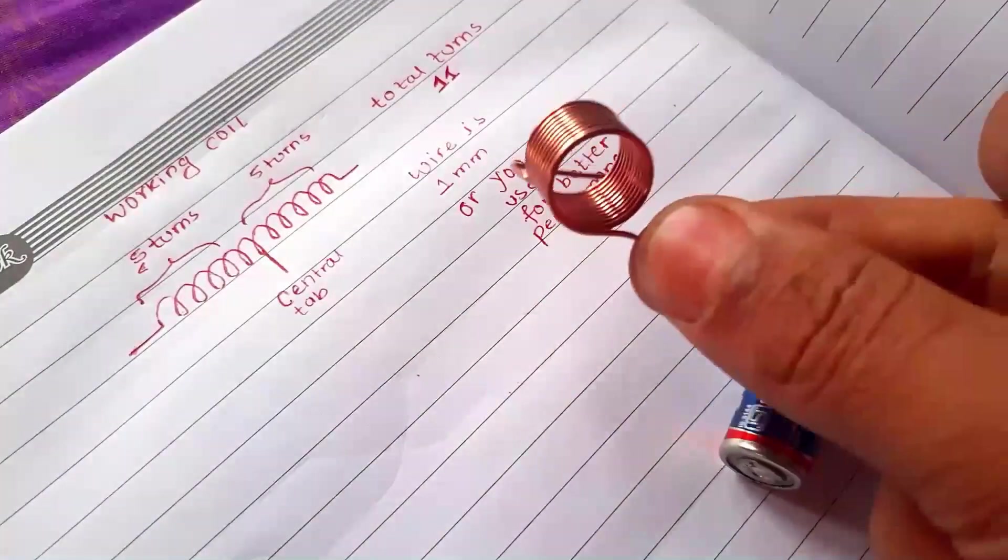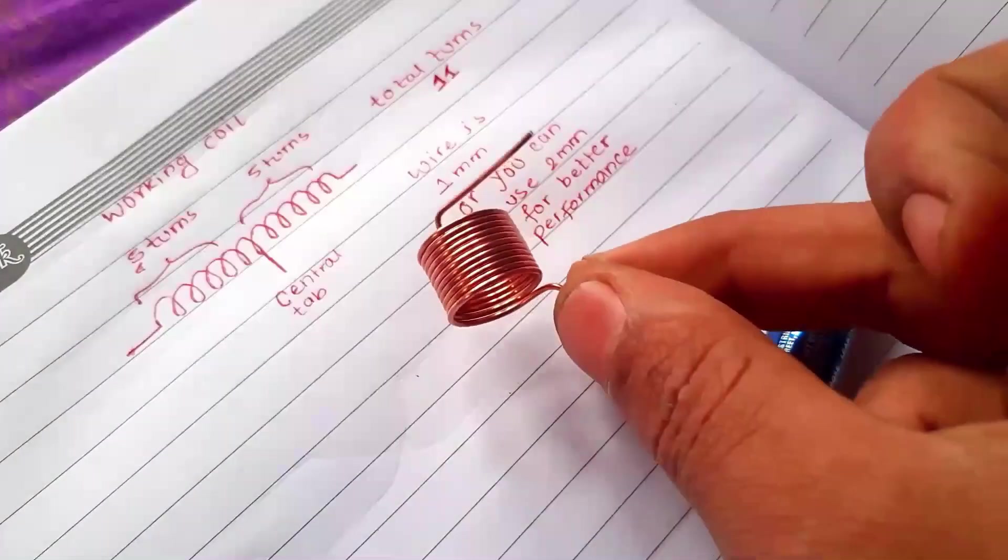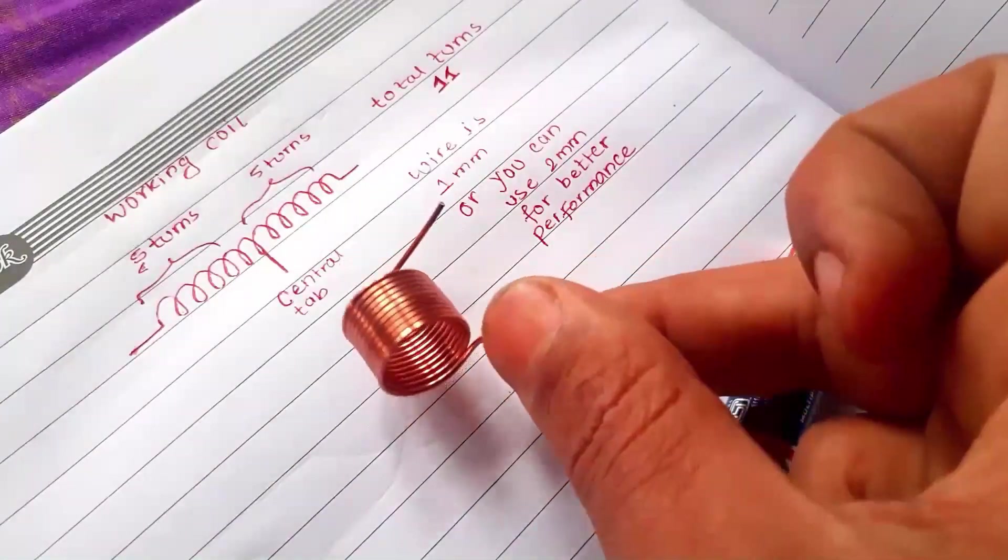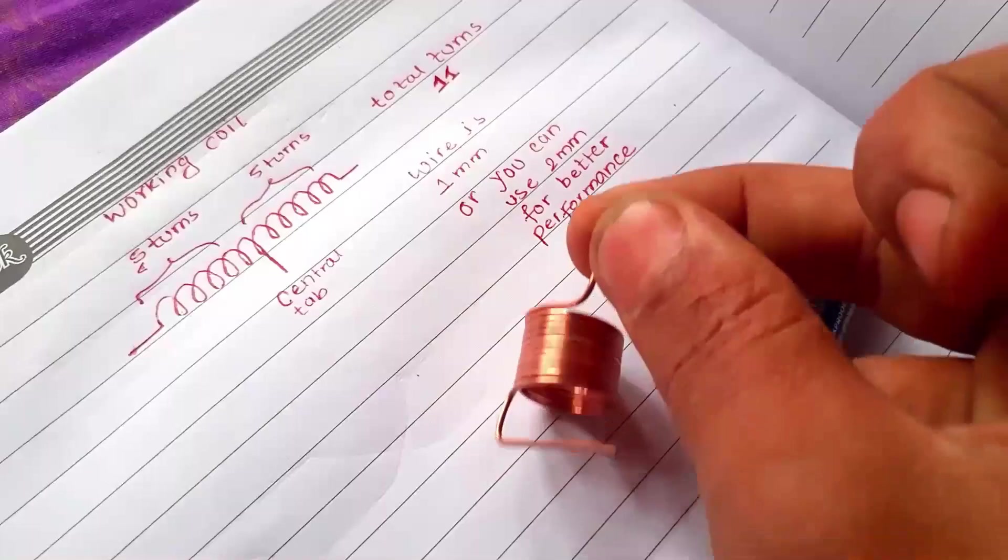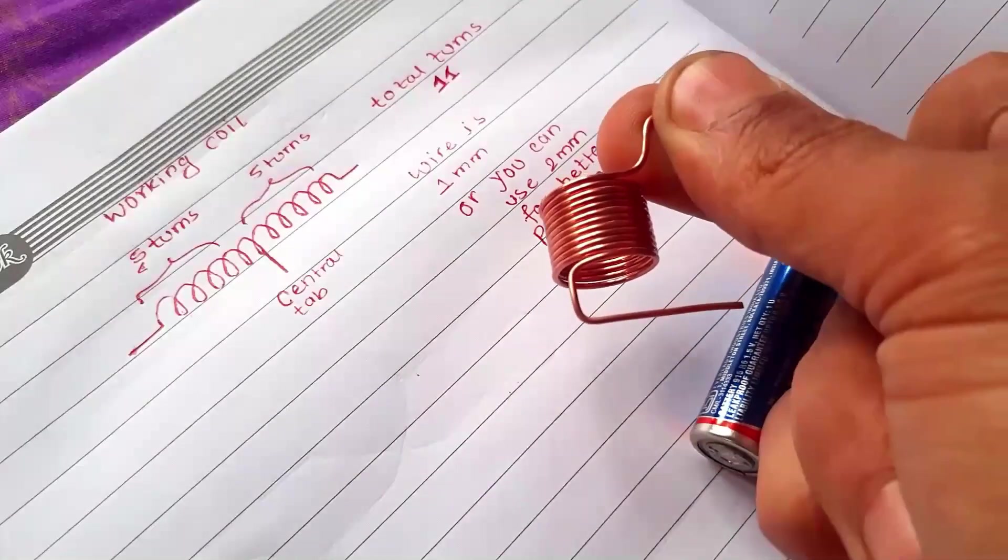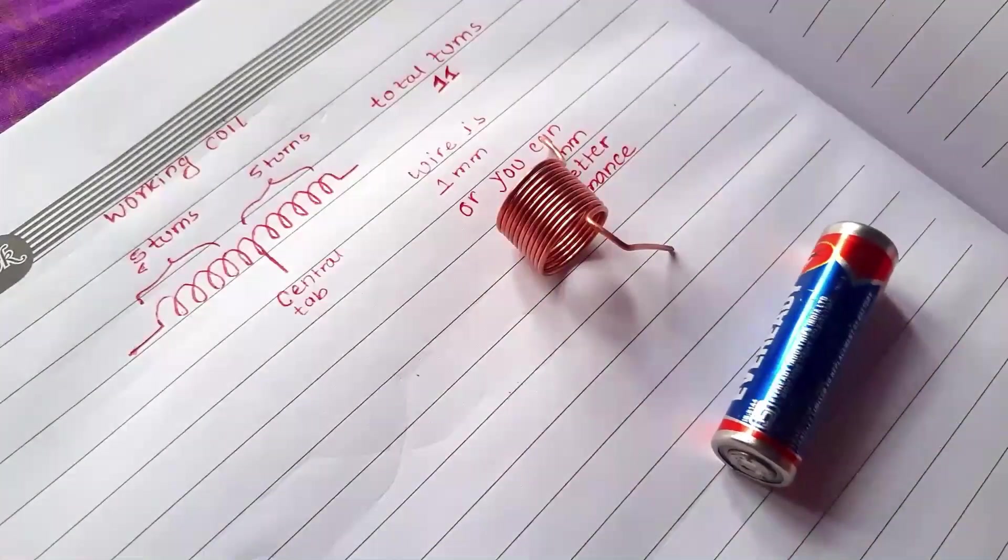The diameter of the working coil is calibrated by the battery as shown here. Total turns of the working coil is 11 turns: 5 turns on each side and one for the center tapping, that becomes 11 turns.